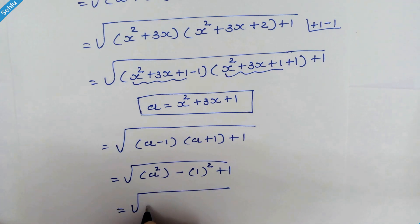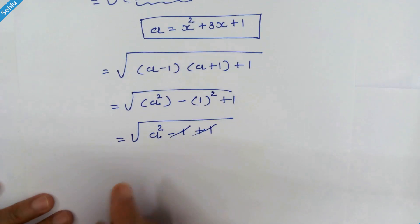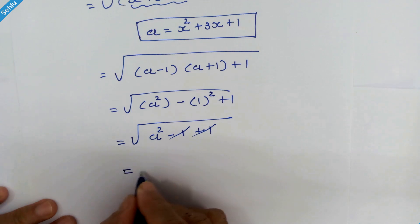So it will be a squared minus 1 squared is 1, plus 1. These cancel out. So we have a.